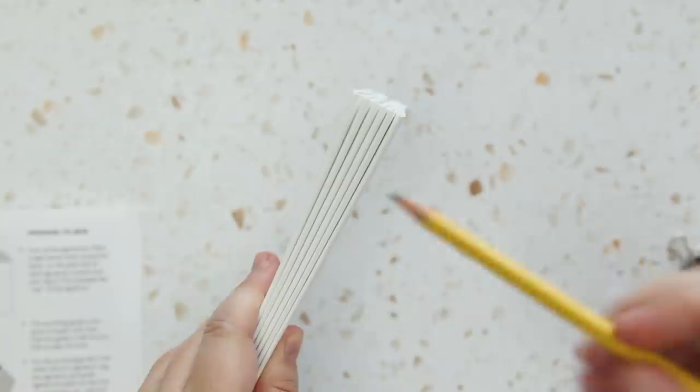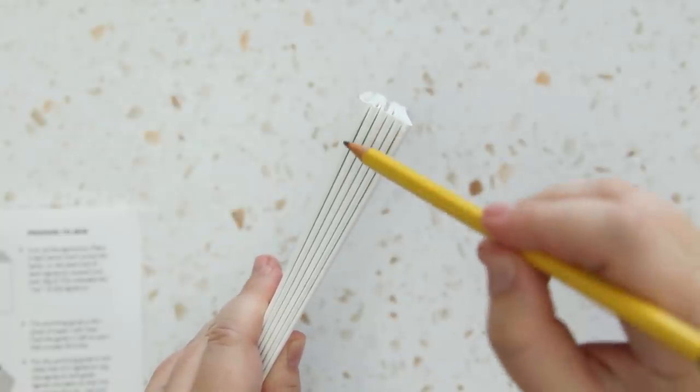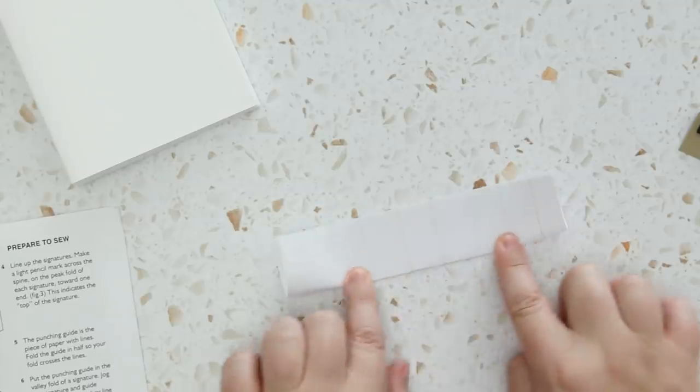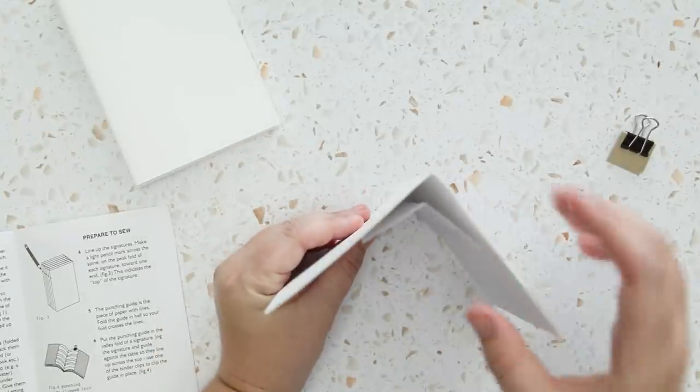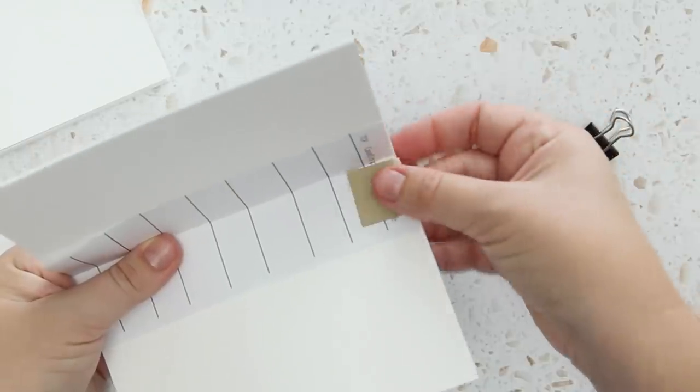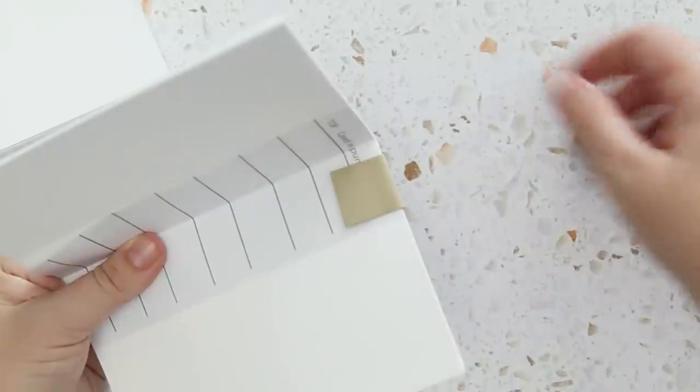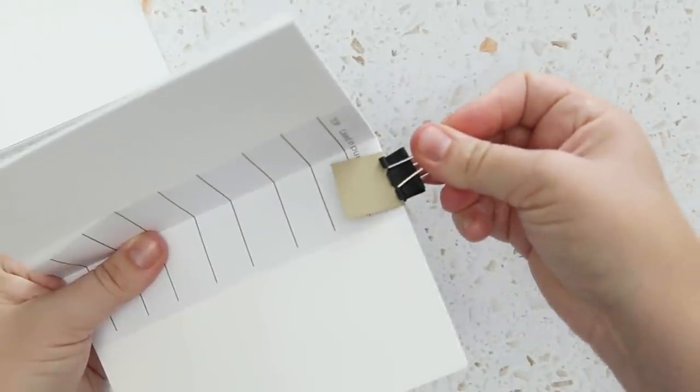I made a light pencil line on the spine to tell which end of the signature is the top, then folded the punching guide in half so I can use it in the valley of the signature, keeping it in place with the binding clips, and it's nice that they included the cardstock so it doesn't dent the paper.